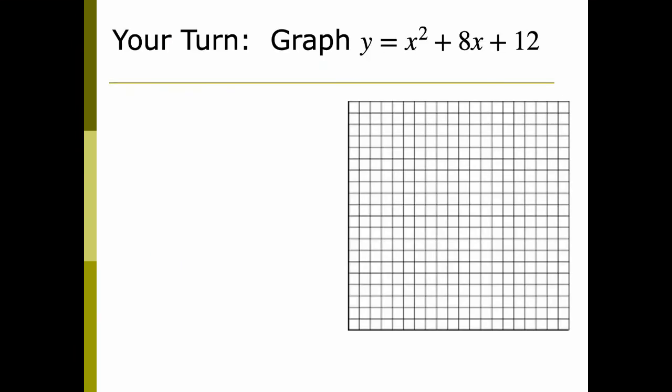Now it's your turn to try one before the worksheet. Graph y equals x squared plus 8x plus 12. Pause your video and try it. Remember: factor it first to find your intercepts, then find the AOS halfway between your intercepts, then use the AOS to find the vertex. Plot your vertex and two intercepts, connect them, and also show your AOS.